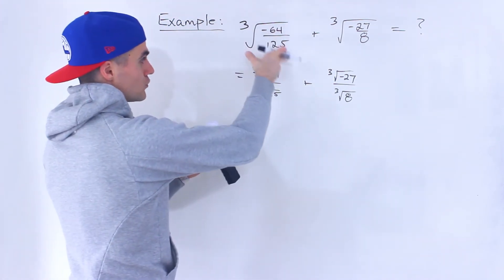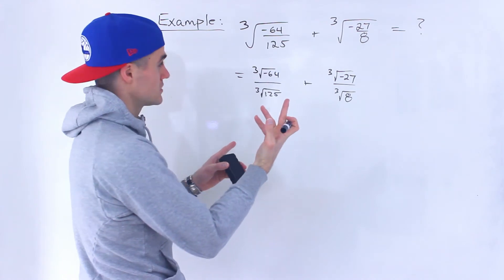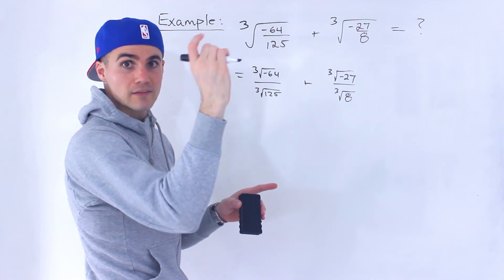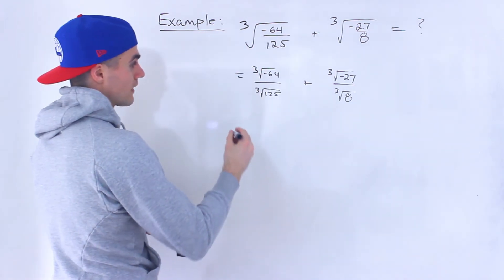Alright, so just taking that third root and then distributing it to the fraction. It's also the same as raising this to the power of 1 over 3 and then distributing that rational exponent to the numerator and denominator.